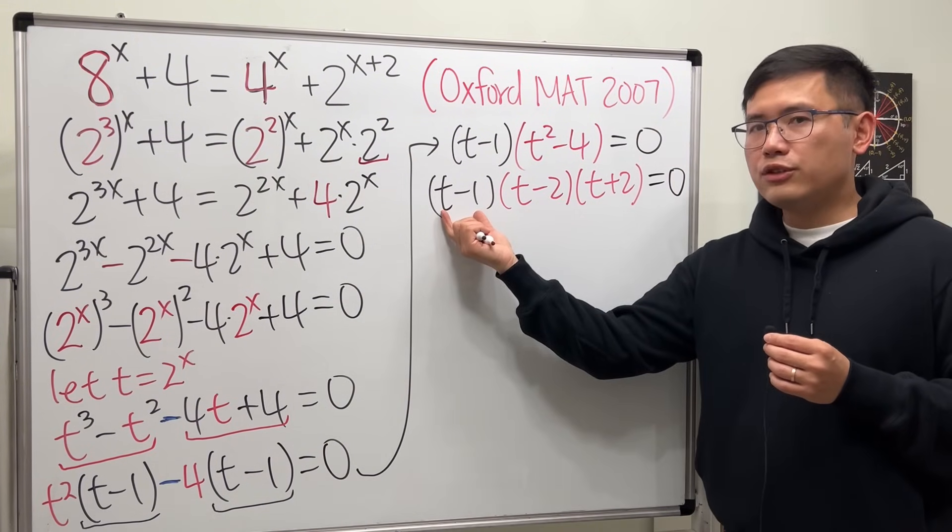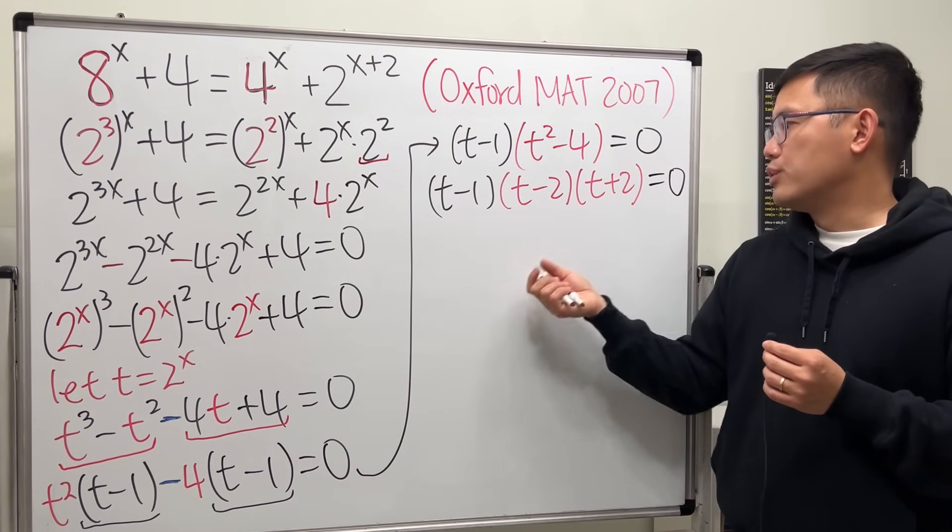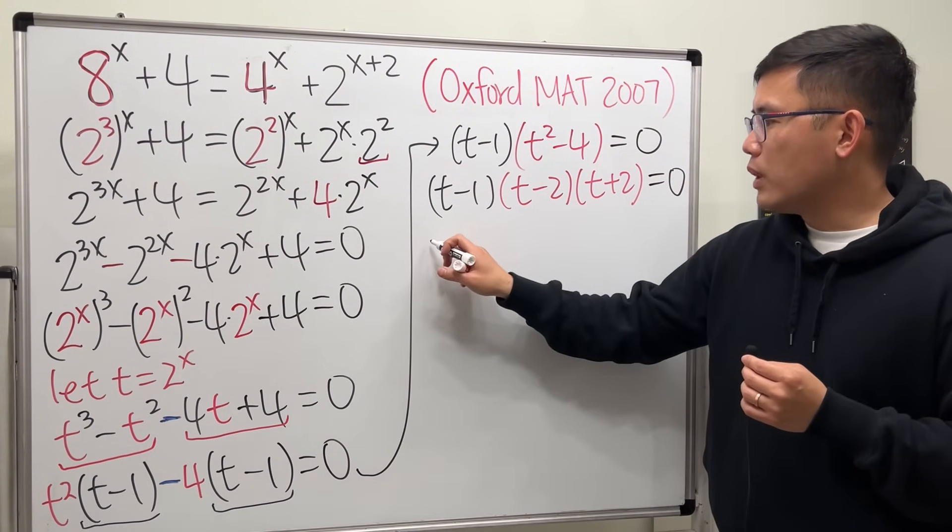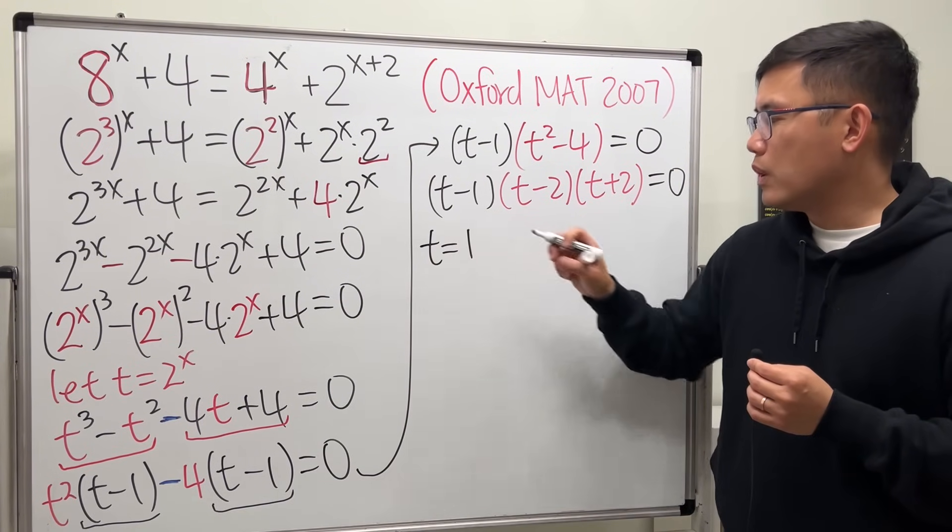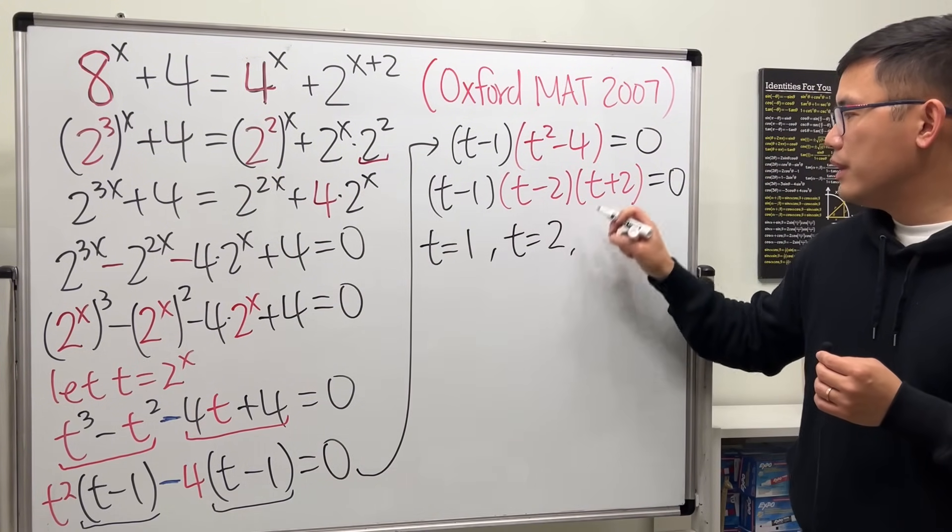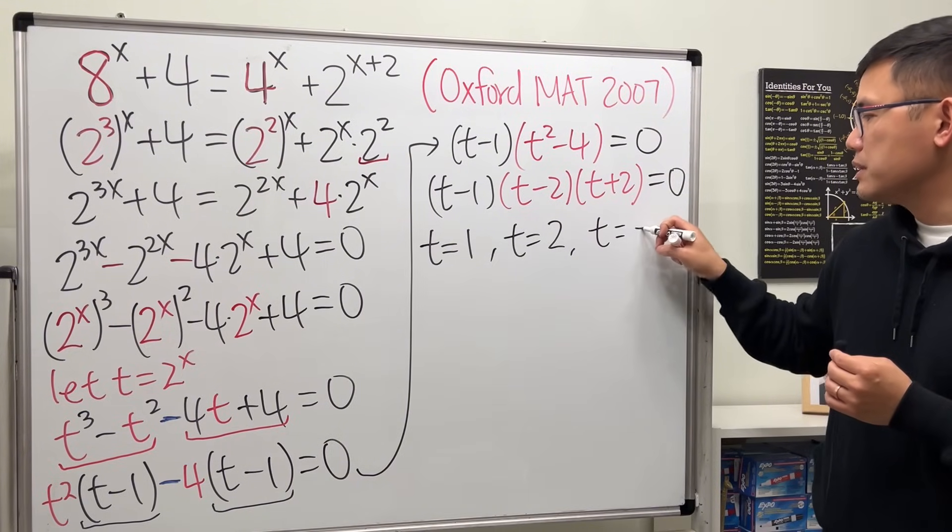So we just have to make this equal to 0, make that equal to 0, and make that equal to 0, and then solve for t's. So for the first one, we know t equals 1. For the second one, t equals 2. And for the third one, t equals negative 2.